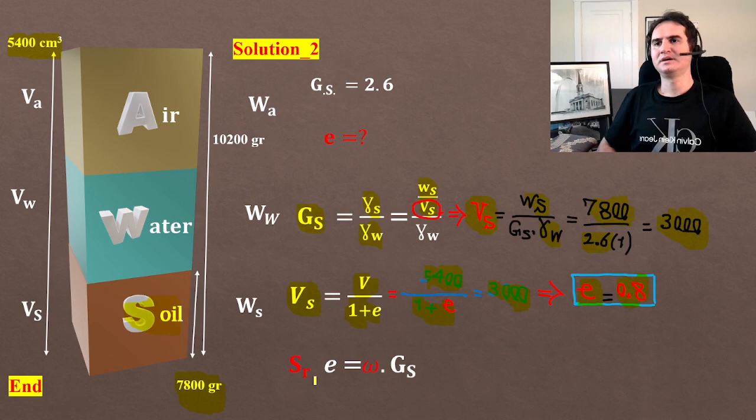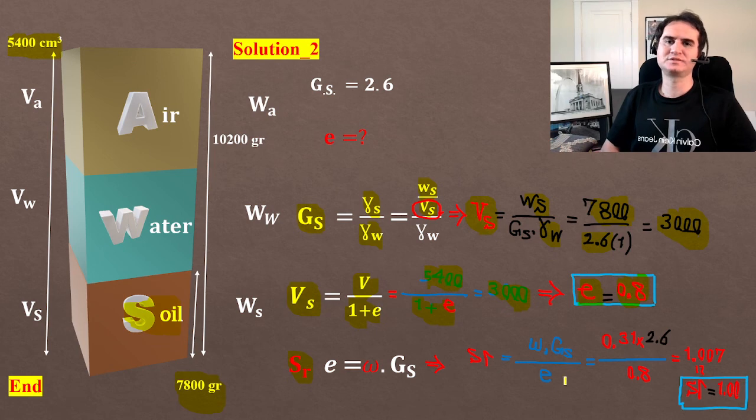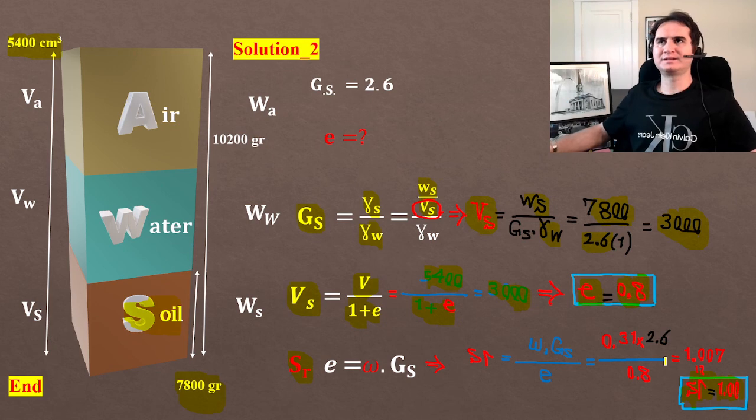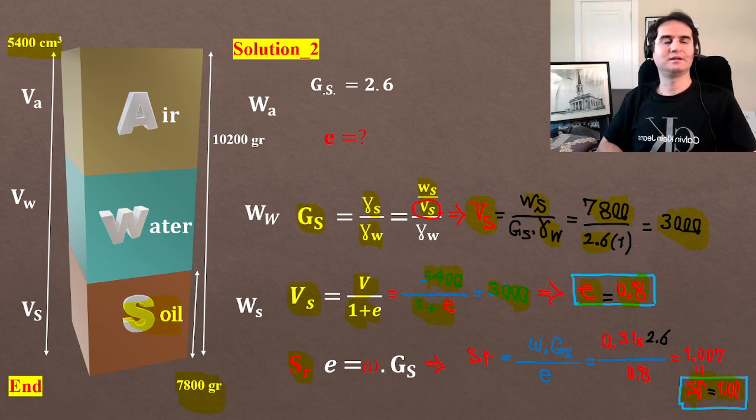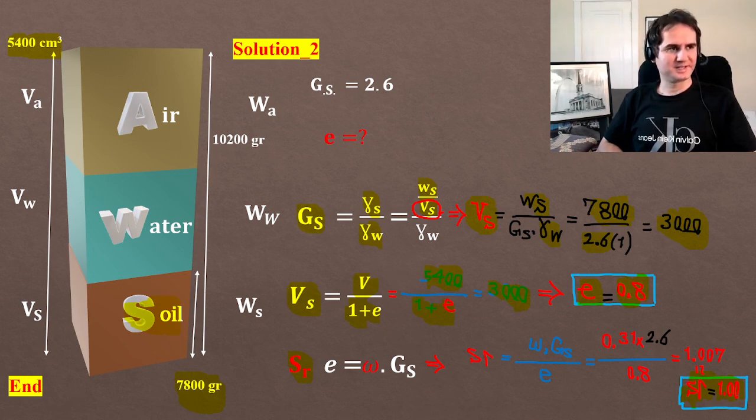Which is the same numeric value we already calculated. If you plug that in, SR times e equals W times Gs, which gives you SR equal to 1, meaning the soil is fully saturated. I think this solution is shorter. Thank you, and we'll hopefully start a new chapter next time.